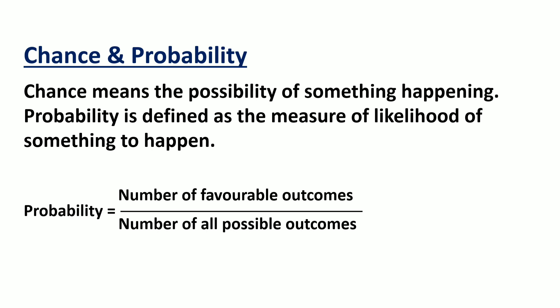There are three types of events. The first one is certain to happen. For example, the sun sets in the west. The probability of such event is 1.